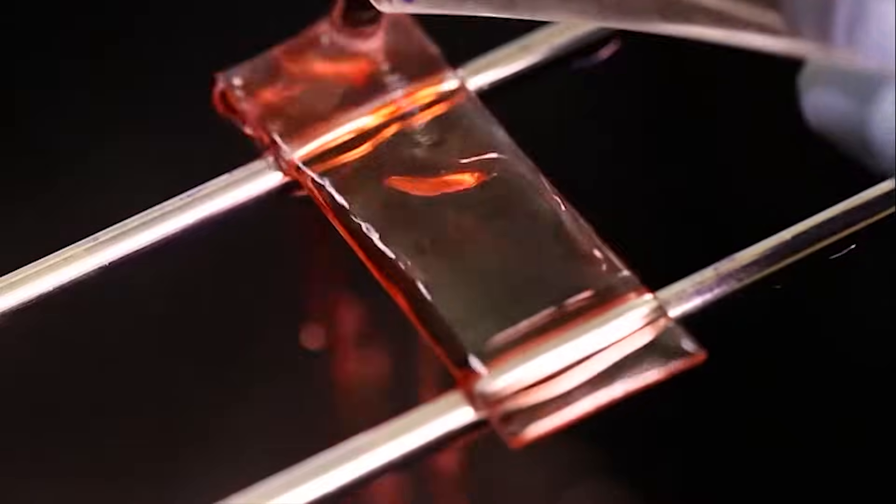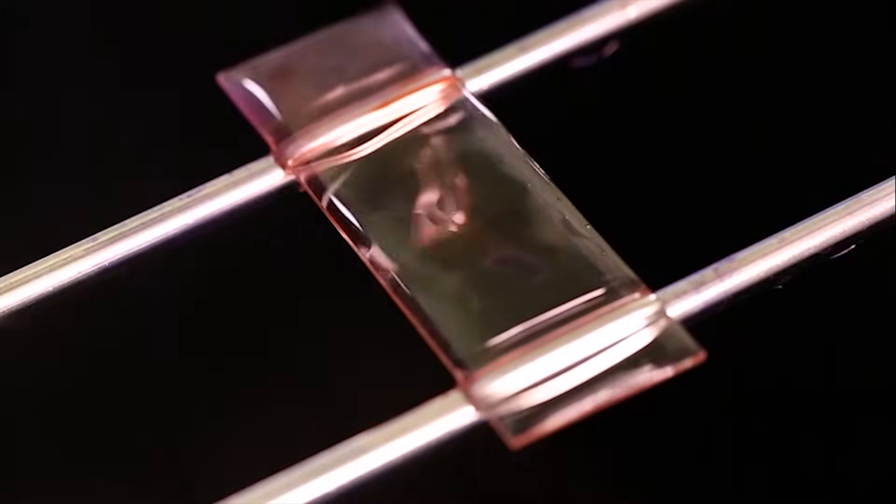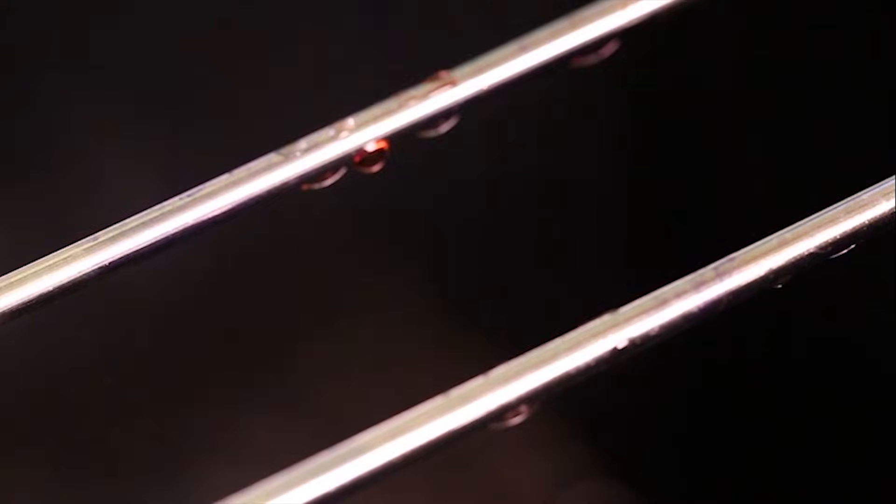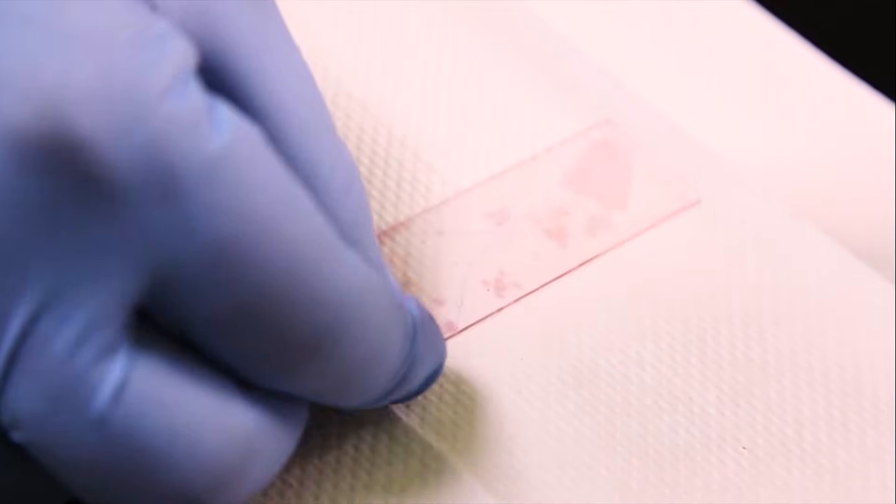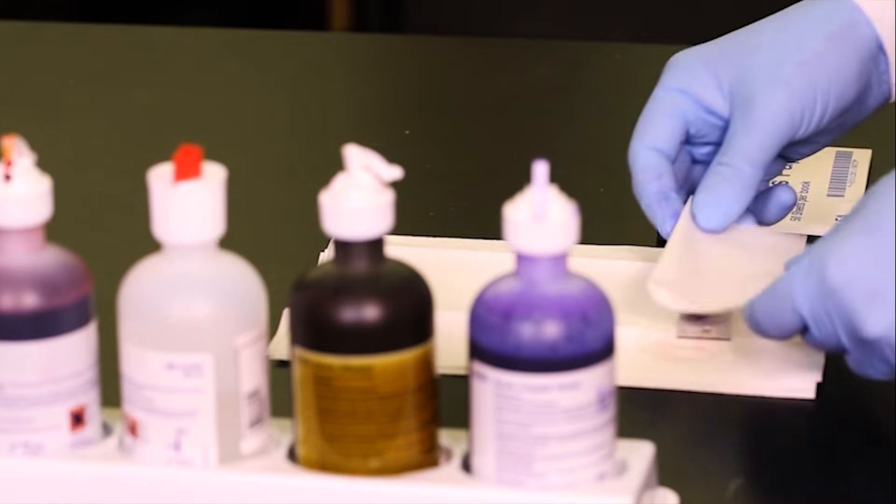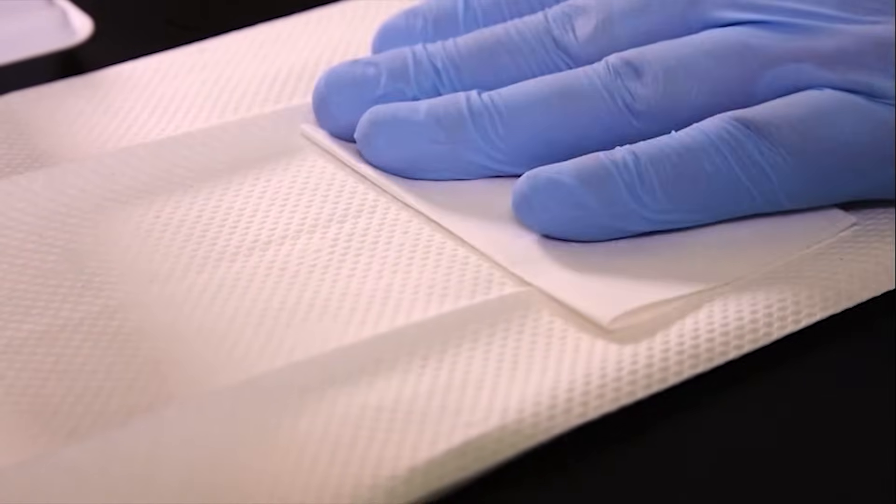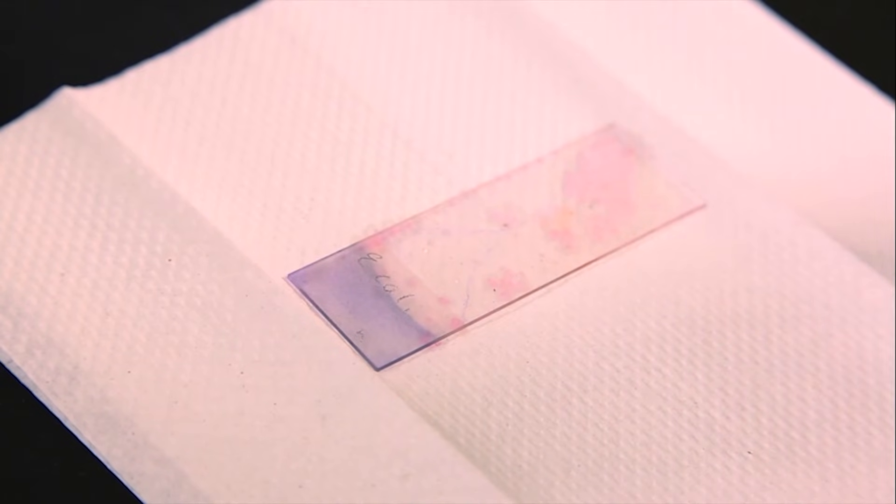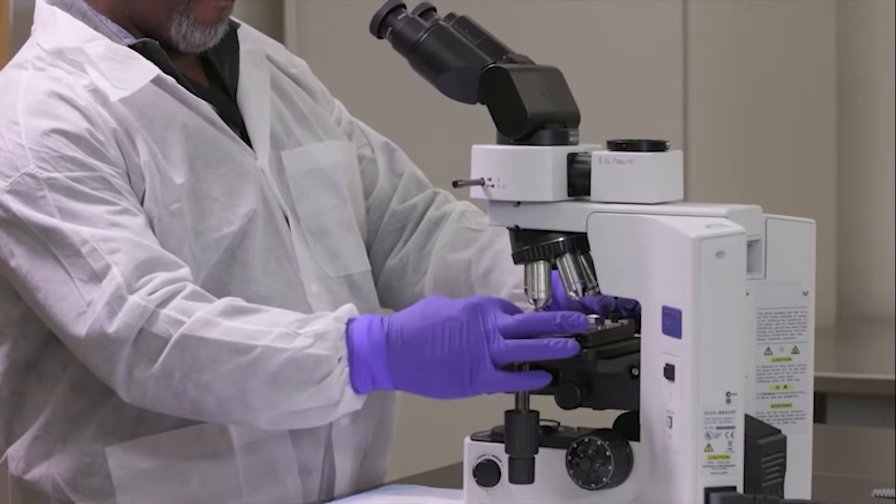Tilt the slide to remove any excess water. You can gently blot the slide with bibulous paper, but be careful not to wipe the smear off the slide. Then allow the slide to air dry. Once the stained slide is dry, it is ready to be viewed under a brightfield microscope.